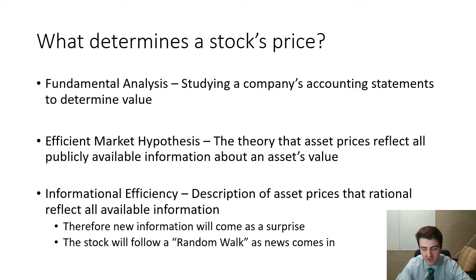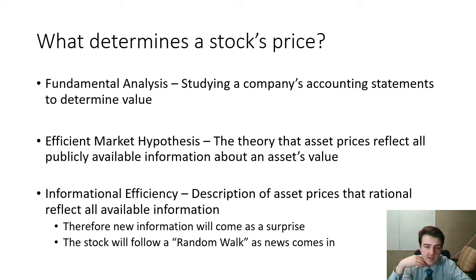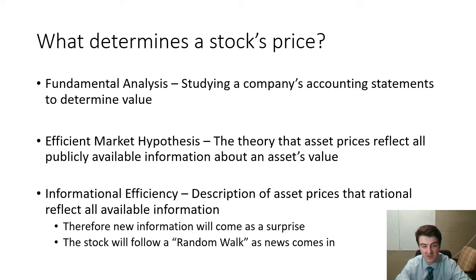And if everybody is using this kind of information to compile good guesses on what the price should be, and then buying according to what they think the price should be, we end up with the efficient market hypothesis — a theory that asset prices reflect all publicly available information about that asset's value. So all publicly available information is picked up in an asset's value. We could call this a state of informational efficiency, where asset prices are reflecting all available information.